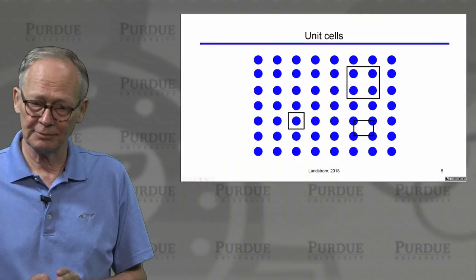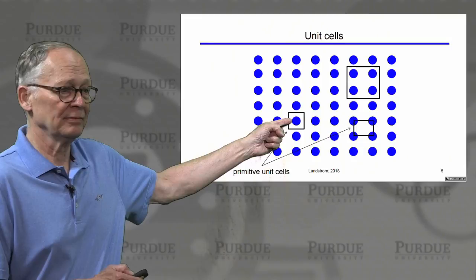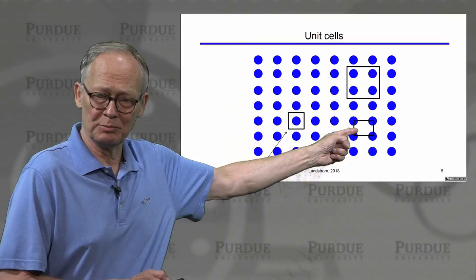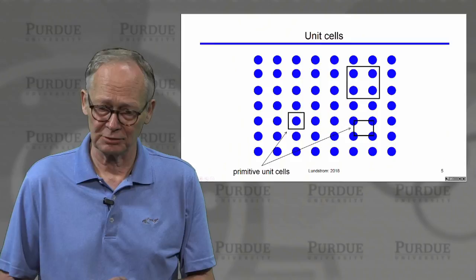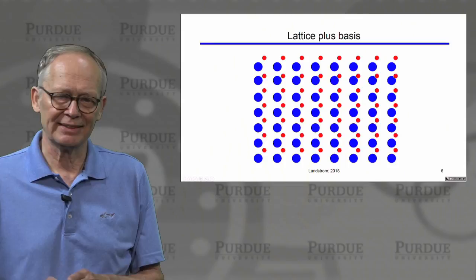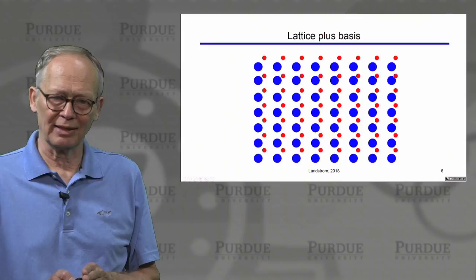Unit cells are not unique. If the unit cell consists of only one atom, we call it a primitive unit cell. A primitive unit cell is also not unique. There are four atoms in this rectangle, but we can only count one quarter of them in each rectangle because they're shared with adjacent rectangles. We'll often talk about a lattice that specifies the location of each atom. Sometimes in a semiconductor material there will also be a basis — additional atoms associated with each lattice point. So we talk about a lattice plus a basis.